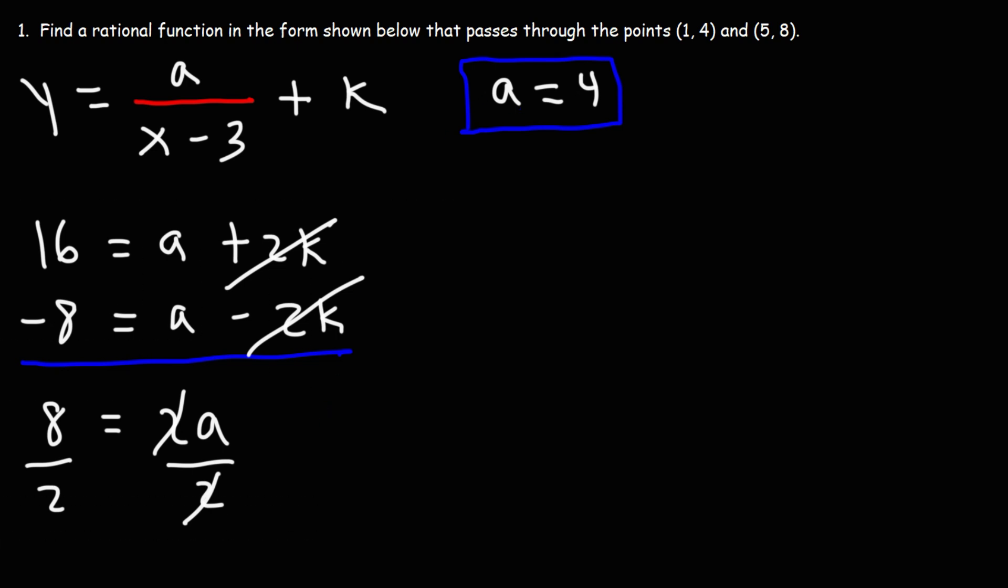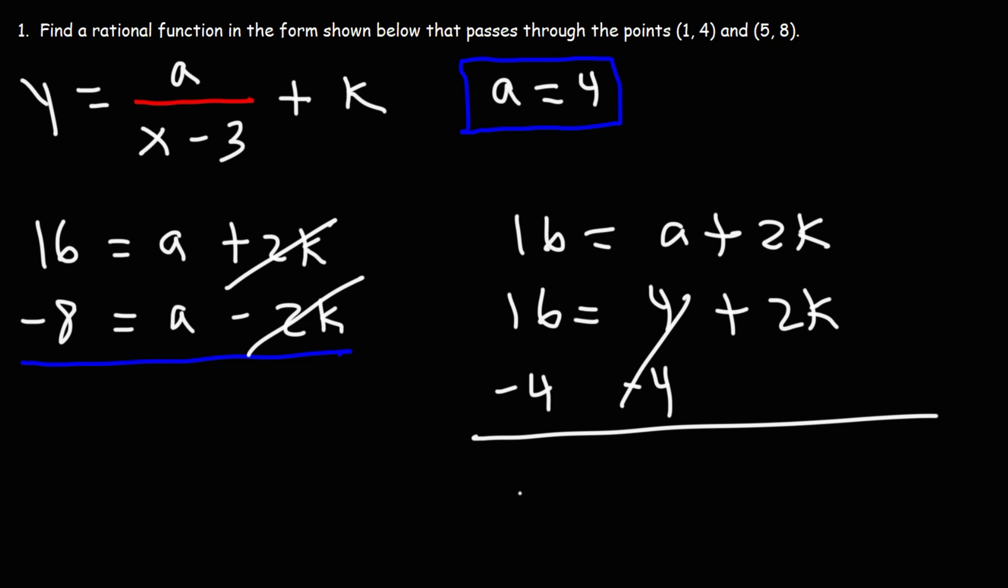So now that we have the value of a, we can calculate k. And we could use any one of these two equations to do so. So let's use the top equation. 16 equals a plus 2k. So let's replace a with 4 and let's solve for k. So subtracting both sides by 4, we get 16 minus 4 is 12. And 12 equals 2k if we bring it down. Divide both sides by 2. We get that 12 divided by 2 is 6. So k equals 6.